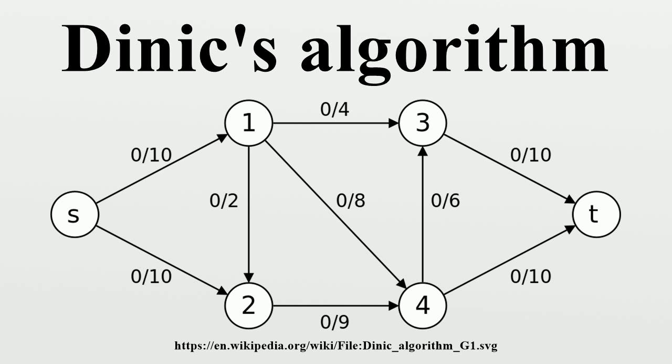Dinic's algorithm and the Edmonds-Karp algorithm, which was published in 1972, independently showed that in the Ford-Fulkerson algorithm, if each augmenting path is the shortest one, the length of the augmenting paths is non-decreasing and it's always terminated.